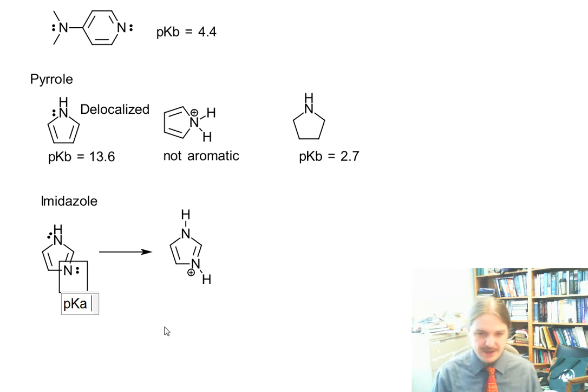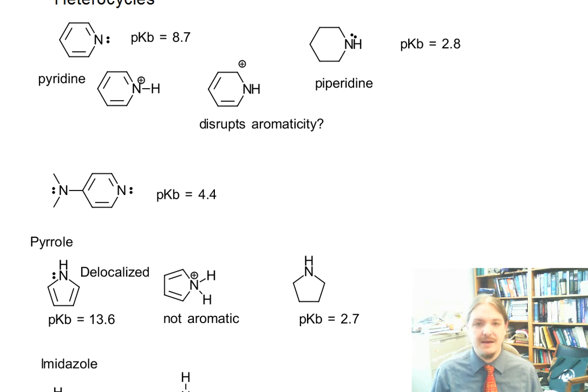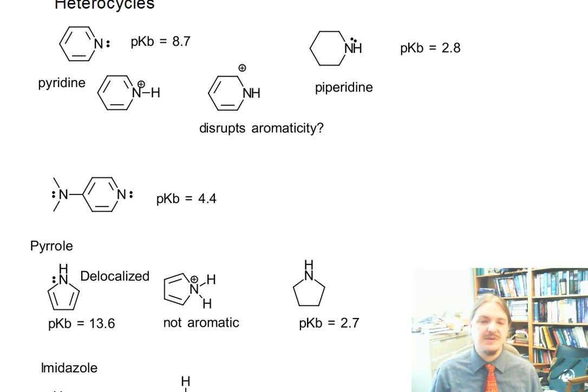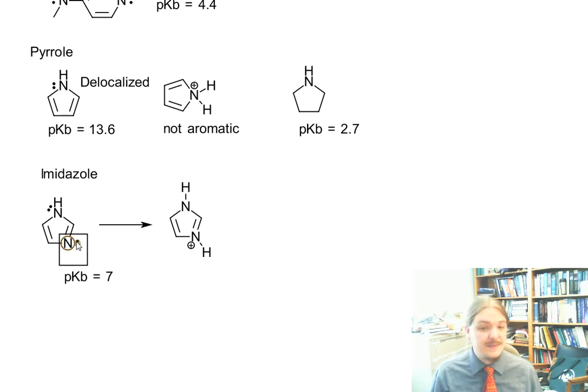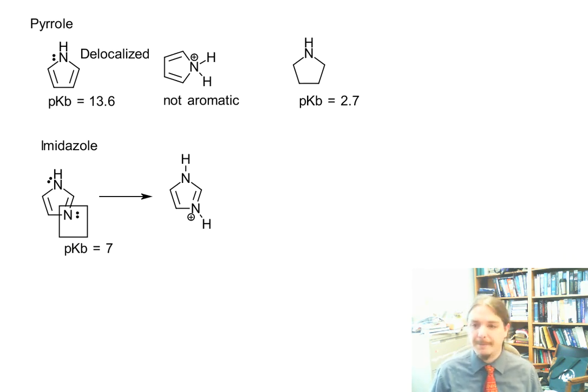The pKB of imidazole is around 7, and so that makes it much more basic than pyrrole by like 6 pKB units. This is 6 pKB units more basic here, just like other amidines are about 6, 7, 8 pKB units more basic than other aliphatic amines. And so imidazole is another commonly occurring biological base. It's the side chain on the histidine amino acid.